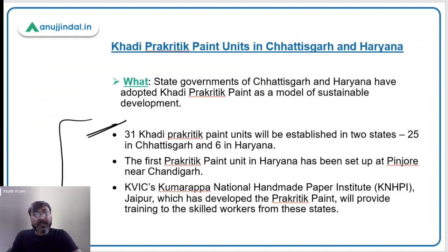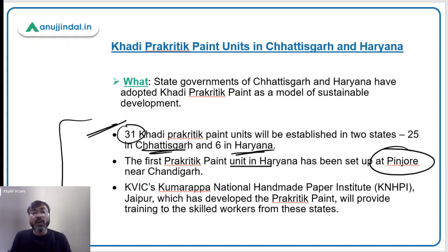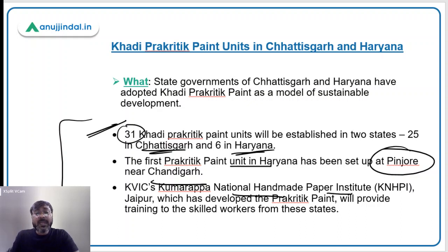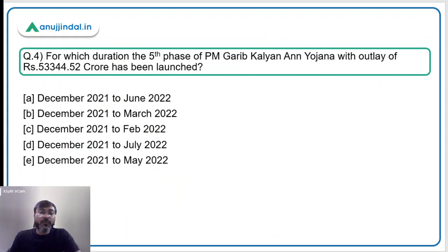Out of the 31 units, 25 will be in Chhattisgarh and 6 in Haryana. In Haryana, the first Prakritik Paint unit has been set up at Pinjore, near Chandigarh. This Khadi Prakritik Paint has been developed by the Kumarappa National Handmade Paper Institute in Jaipur, and this institute will provide training to skilled workers from these states. Therefore, Option E — Haryana and Chhattisgarh — is the correct answer.